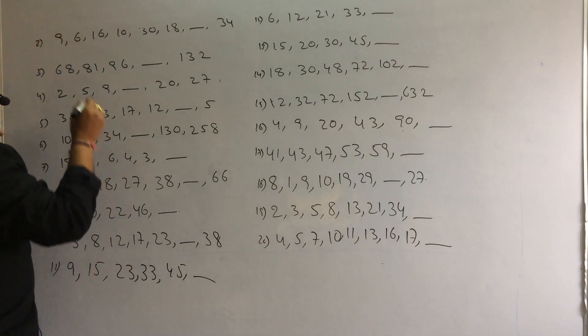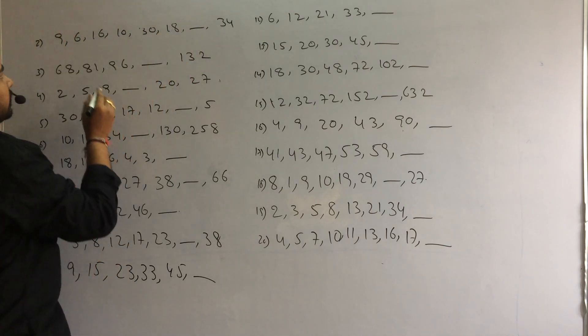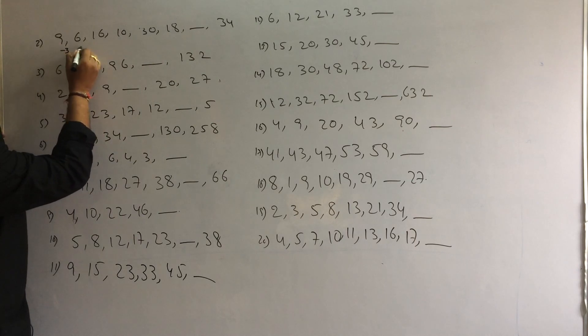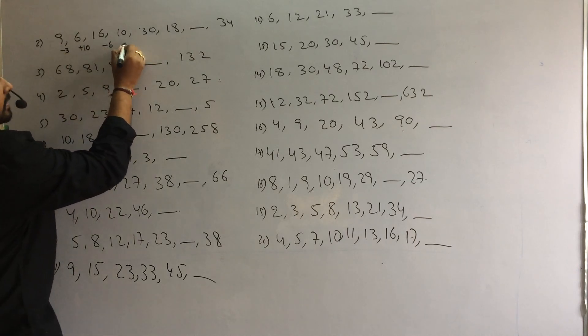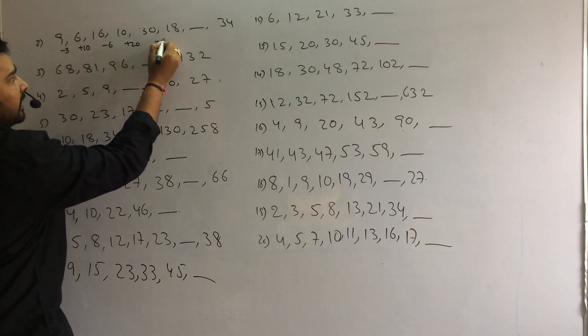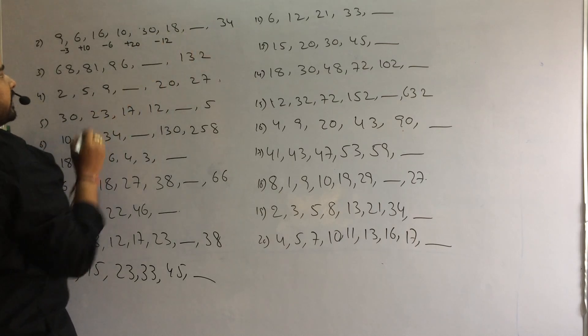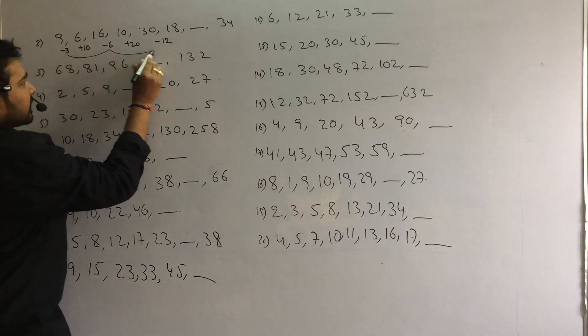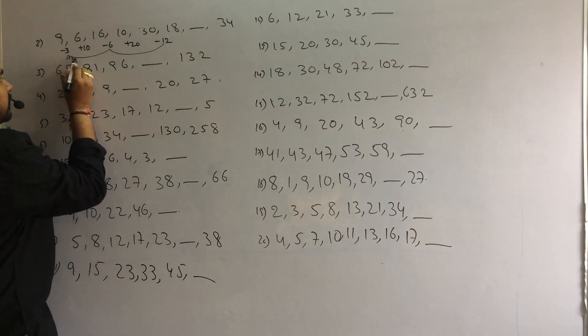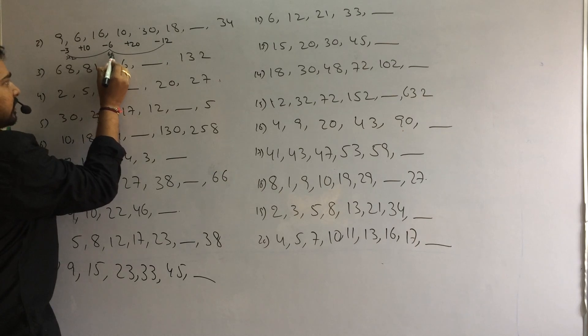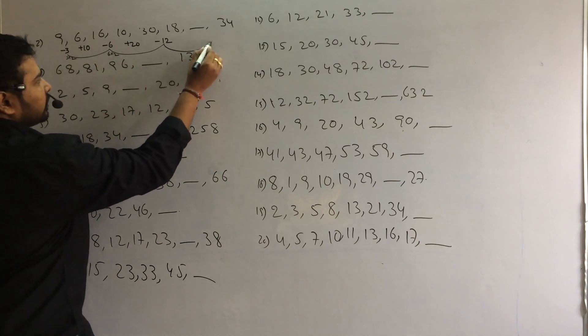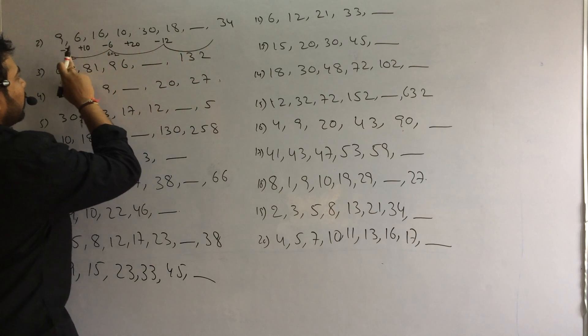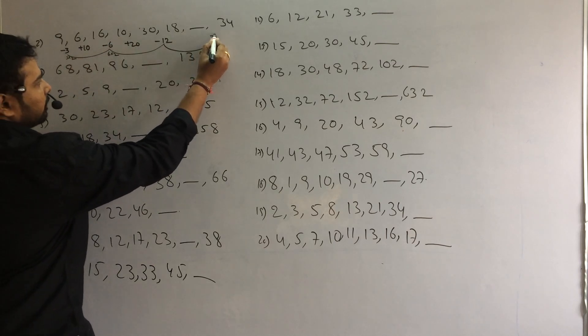Next, second problem. Here also difference is very normal. Here difference is minus 3, plus 10, minus 6, plus 20, minus 12. What next? If you look at all, three, six, twelve. Three twos are six, six twos are twelve. Twelve twos, twenty four. Minus, minus, minus. Minus twenty four.